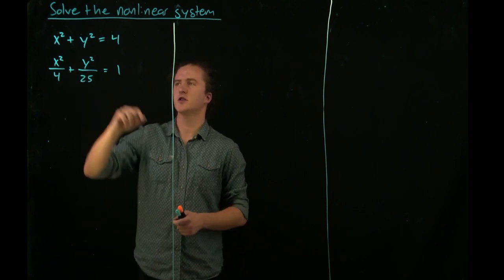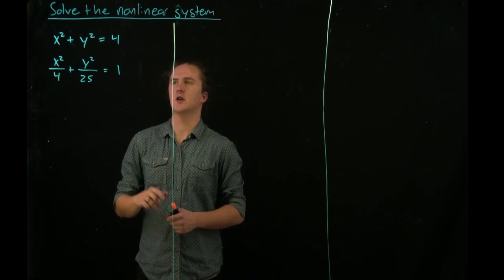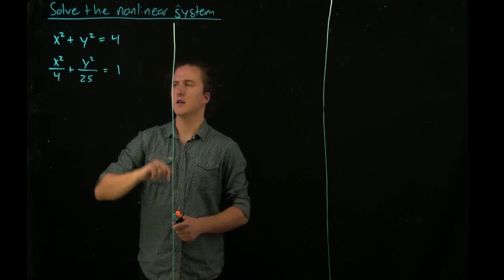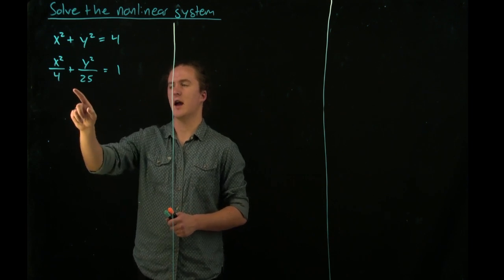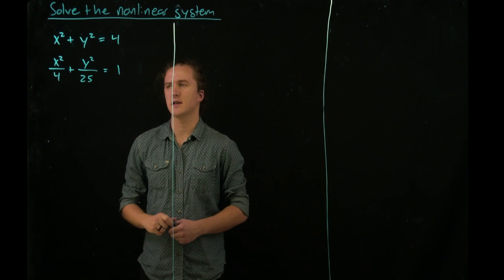Now this first equation you should recognize as the equation of a circle with radius 2, and the second you should recognize as the equation of an ellipse with minor axis 2, major axis 5.